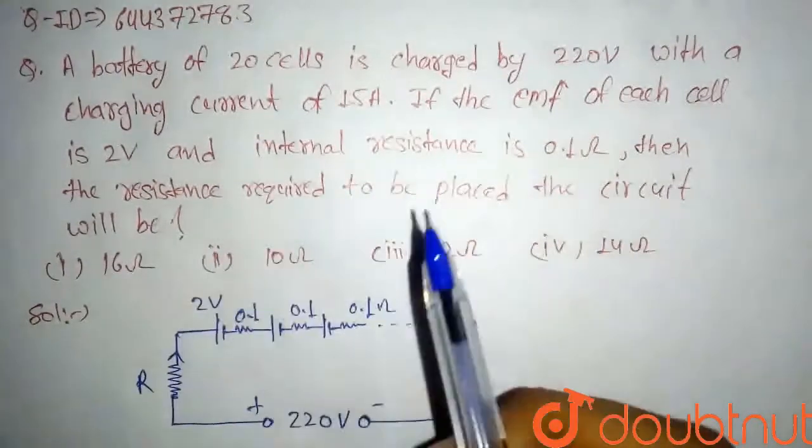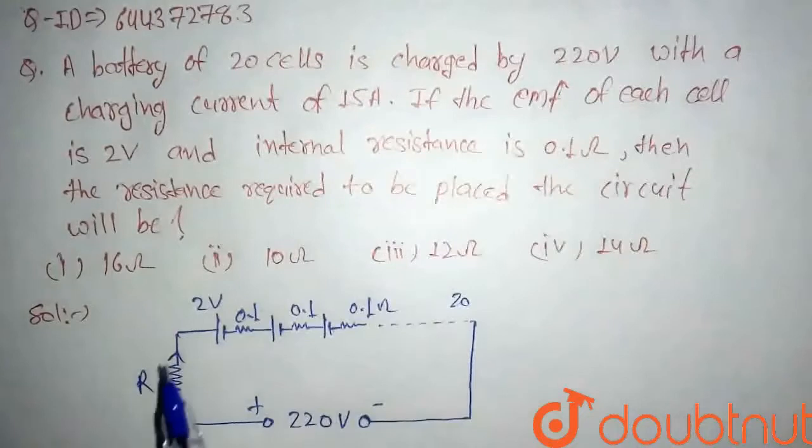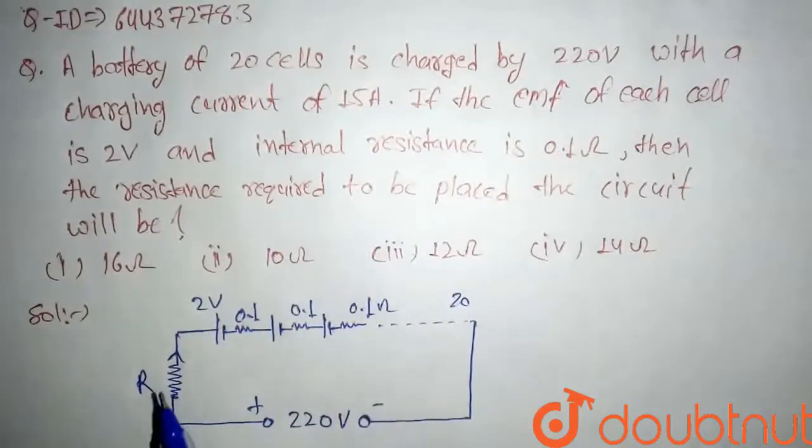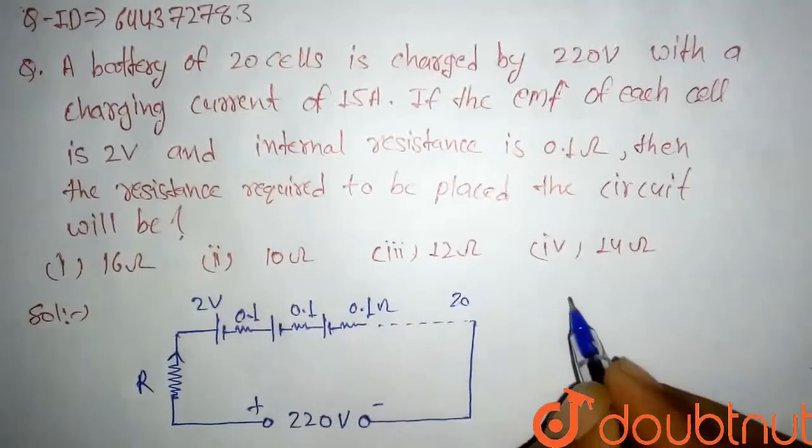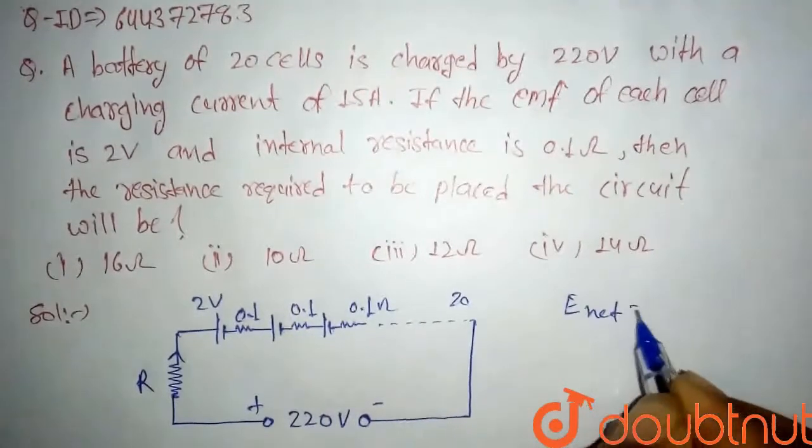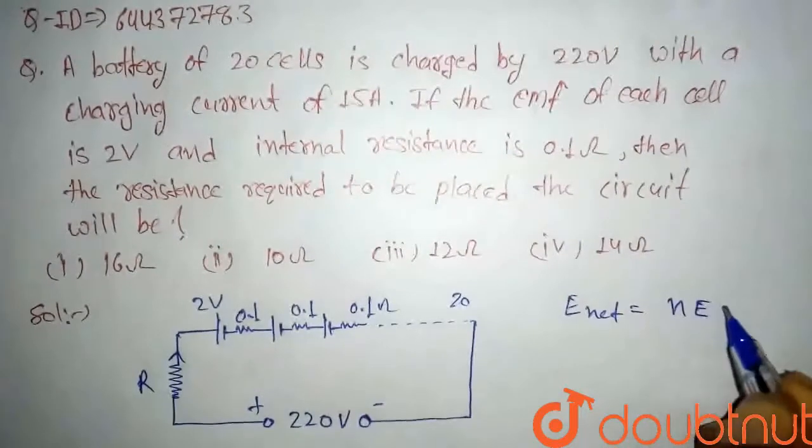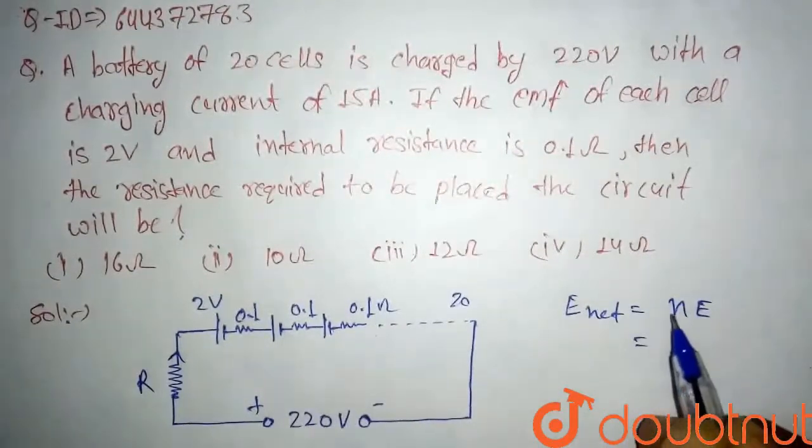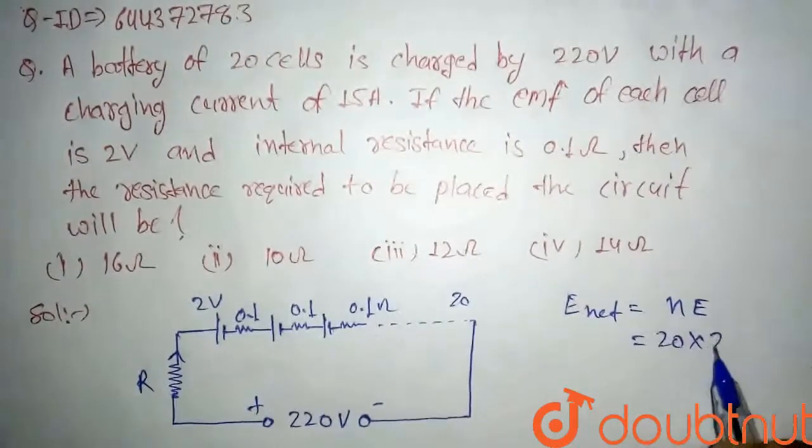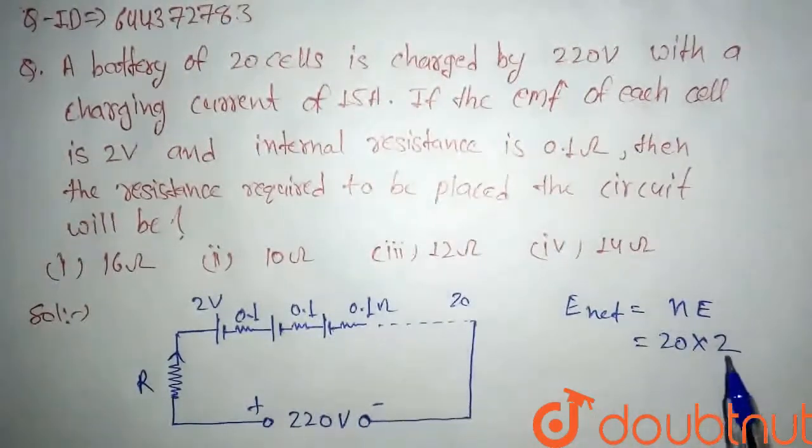We have 20 cells, so what will be the net EMF? Net EMF is given by n times e, where they are connected in series. Our number of cells is 20, so net EMF will be 20 times 2, which is the EMF of each cell, so it comes out to 40 volts.